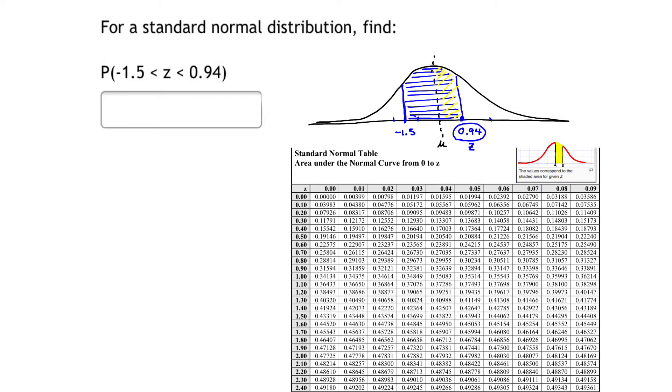We go to the table and find z = 0.94. We look at the horizontal row 0.9 and the vertical column 0.04. Putting those two together, we find that the area under the curve corresponding to z = 0.94 is